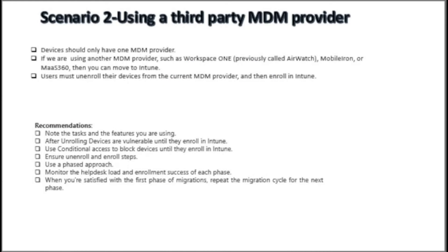The second scenario in Intune infrastructure deployment is when we are using a third-party MDM solution to manage devices. An important point is that a device can only be managed by one MDM solution at a time. If an organization is using another MDM provider such as Workspace ONE, MobileIron, or MaaS360 and wants to move to Intune, then users must unenroll their devices from the current management solution and then enroll their devices in Intune.